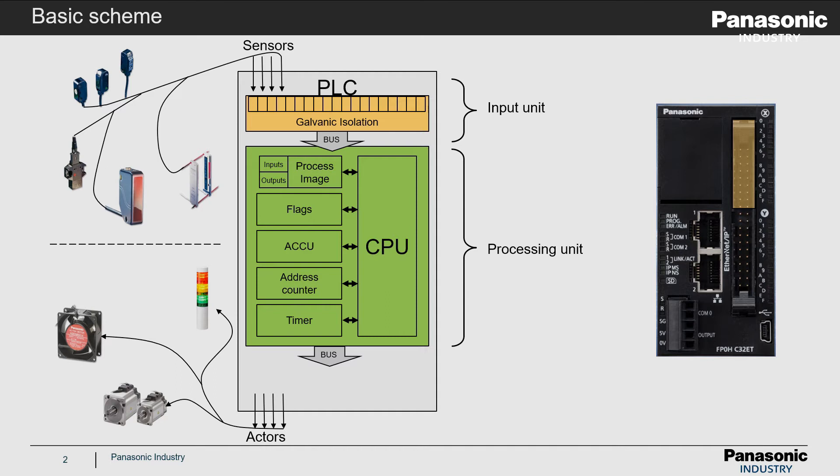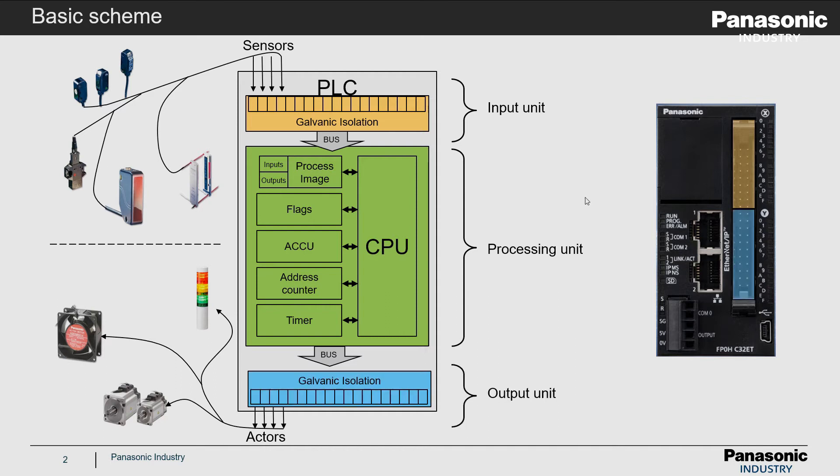The PLC also has some digital outputs on board. These outputs are highlighted here with blue color. Via these outputs you can connect actors, for example a fan or a signal light, to control them.